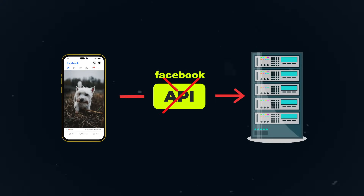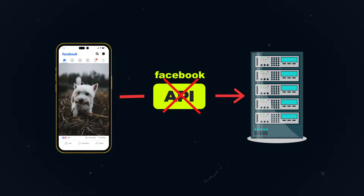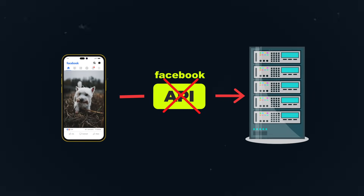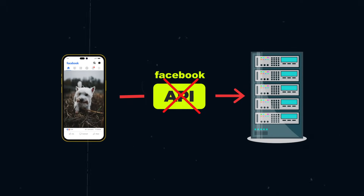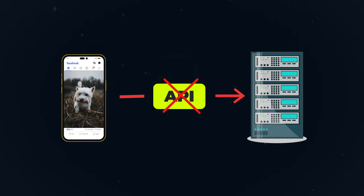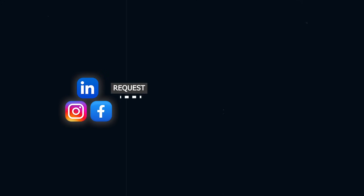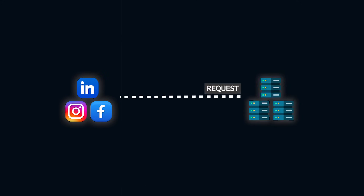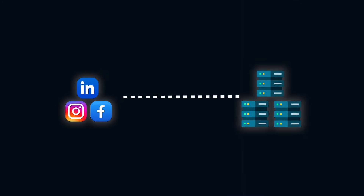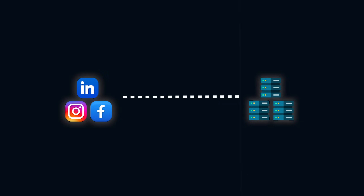Without the API, the Facebook app would not be able to communicate with the Facebook server to upload the picture. So in short, apps send a request to the server asking for specific information or action. The server then processes this request and sends back a response.